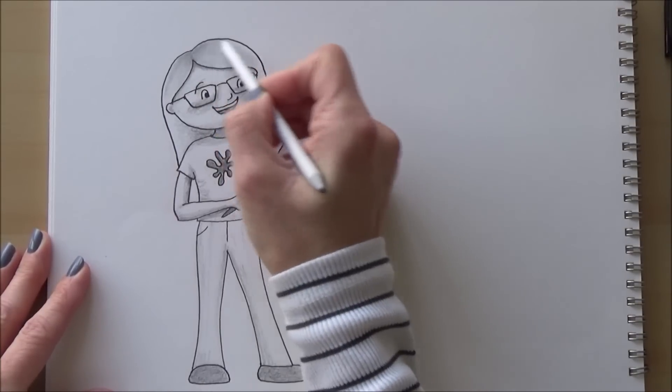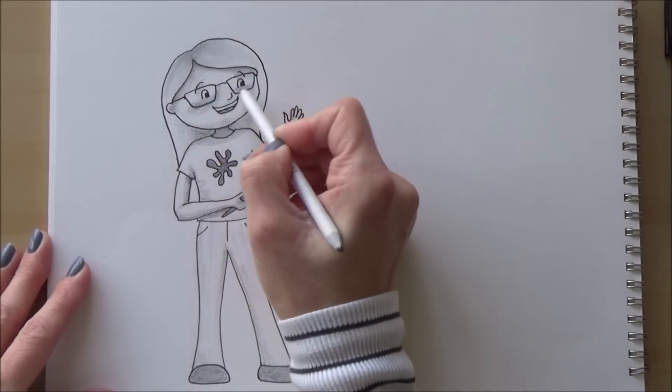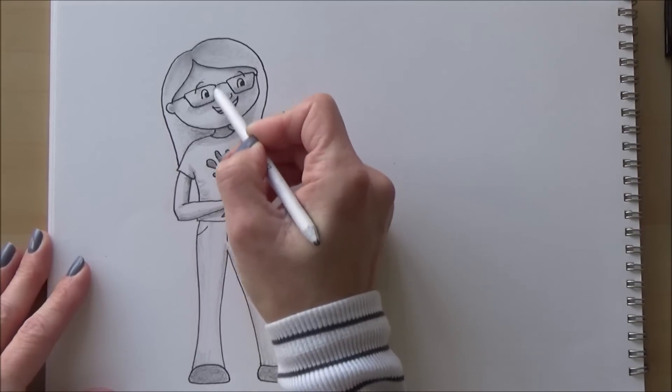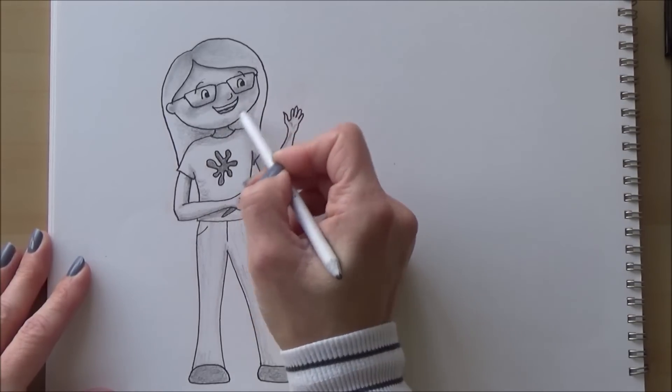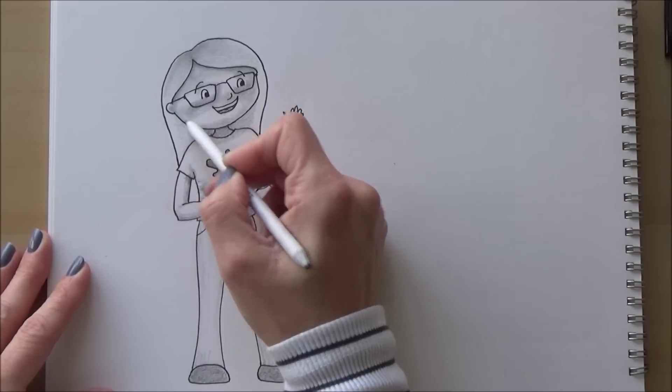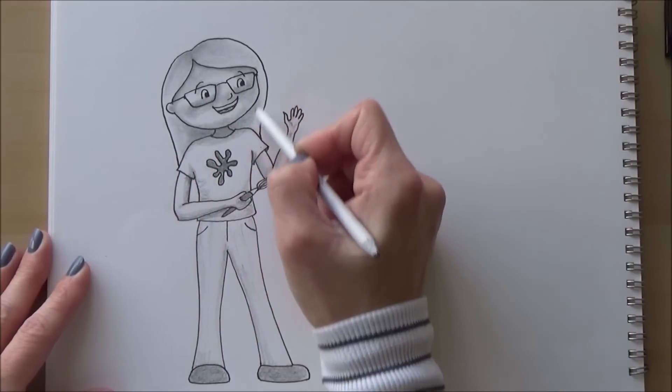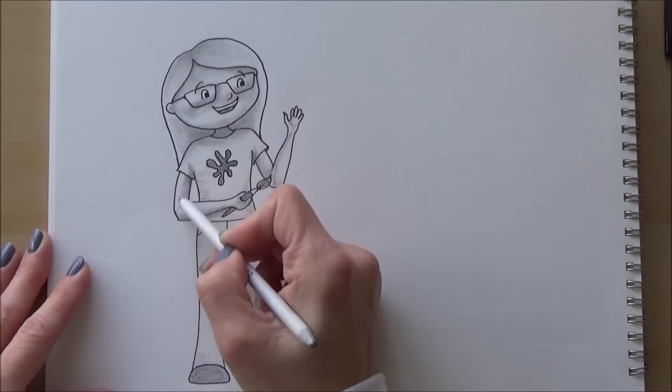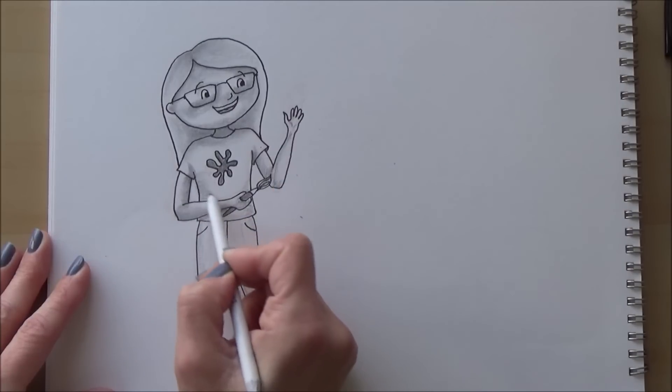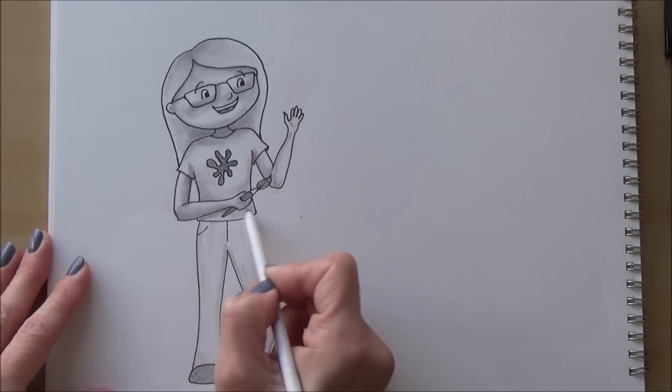And once the first layer was down, I went in with my blender to smooth out the shading. But if you want to try this at home and haven't got one of these, you can use a cotton bud or tissue. Or if you really want to, you can make your own tortillons, and I have a video on how to do this and will link this in the card above as well.